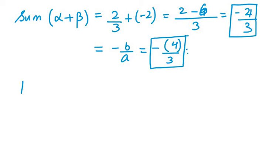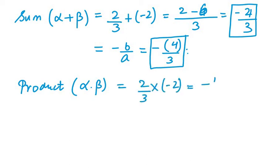Now what we need to do is we need to find product of zeros, that is α × β. α × β is 2/3 × (-2) = -4/3.